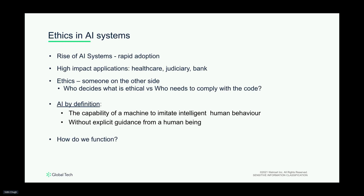In an ML solution, when there are predictions, a human expert can always validate them. In the case of ethics, do we have an ethics expert who can validate that the output given by the model is the most correct? That's the ethics definition — loosely defined — but the definition for AI is certainly not. AI is the capability of a machine to mimic human behavior so much that it does not need explicit guidance. We don't need to explicitly code it out. So if AI is tied to human behavior, we need to understand how we as humans function.